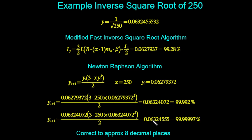Looking at the actual decimal places, we are correct to around 8 decimal places. When using 32-bit floating point arithmetic as per IEEE 754, it is only ever accurate to within 7 or 8 significant figures. So this value tells us we have a really good approximation for the inverse square root of 250.